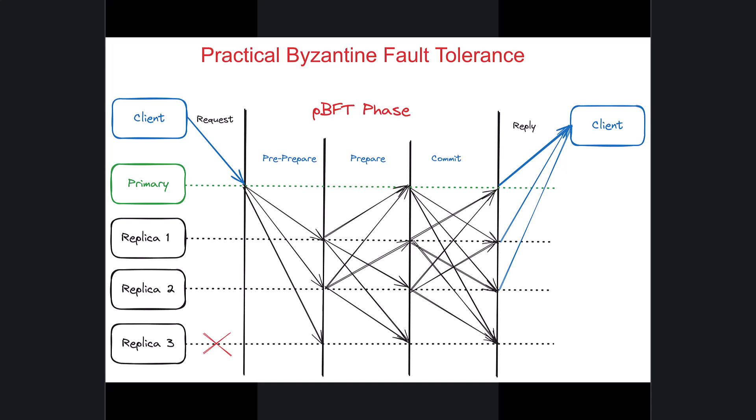In the pre-prepare phase, upon receiving the request, each node validates the request and broadcasts a pre-prepare message to the network indicating its readiness to process the request. Once a node collects pre-prepare messages from a two-thirds majority of nodes, it broadcasts a prepare message to signal that it has validated the request and is ready to commit to the proposal block.